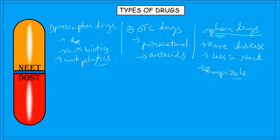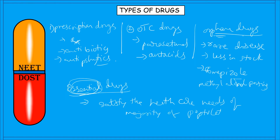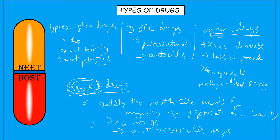The best example of an orphan drug is fomepizole, which is used to treat methyl alcohol poisoning. Another category is essential drugs, which refers to drugs that satisfy the healthcare needs of the majority of the population in a country. There are approximately 376 essential drugs, and examples include anti-tubercular drugs used for treating tuberculosis.